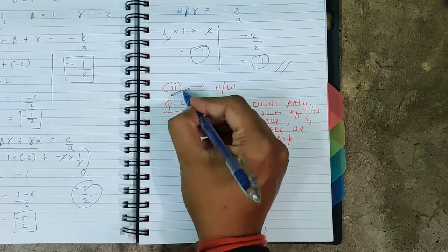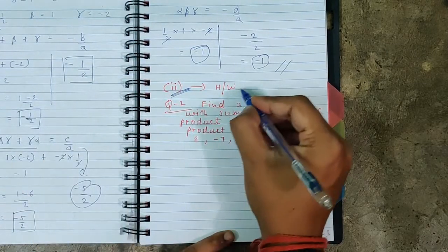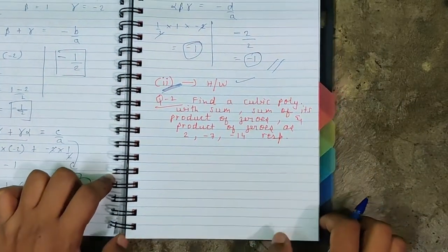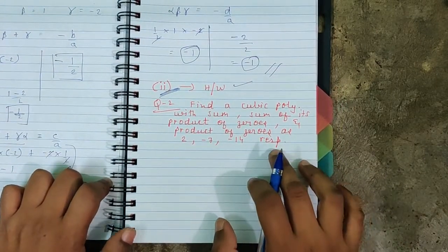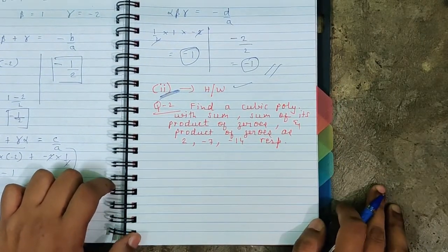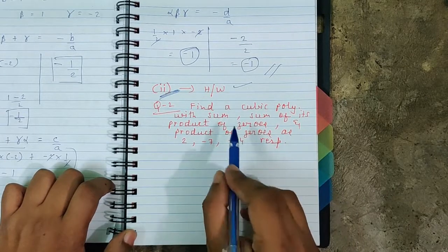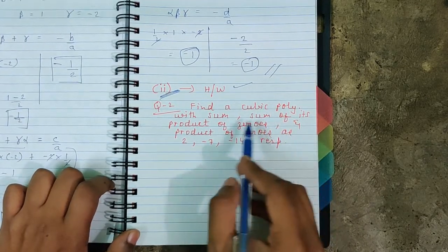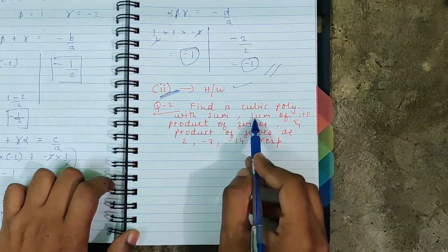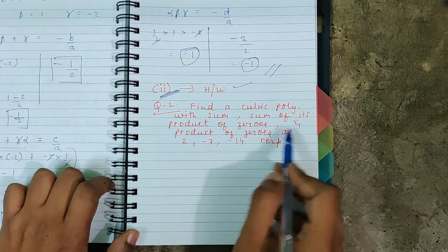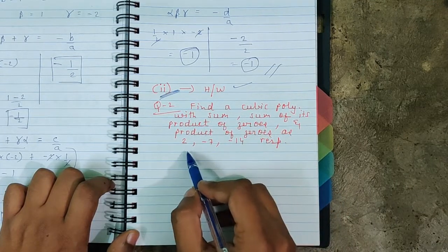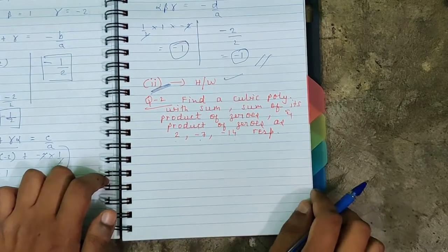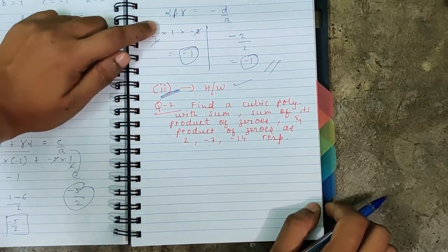We've solved question one. Question one has one more part of the same pattern — that will be your homework. Now let's go to question number two. This is the same pattern: we have to find a cubic polynomial where the sum of zeros, sum of product of zeros, and product of zeros are stated as two, minus seven, and minus fourteen respectively.